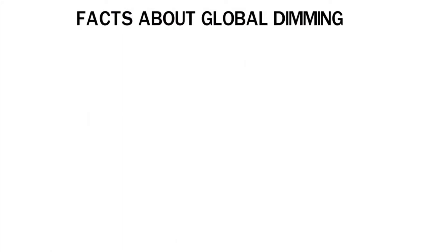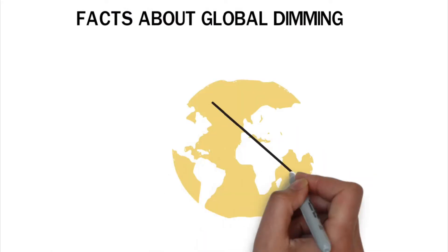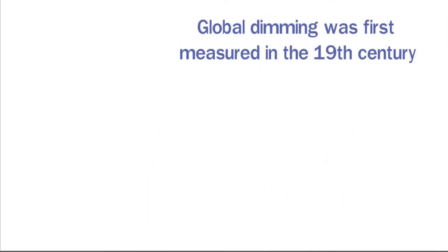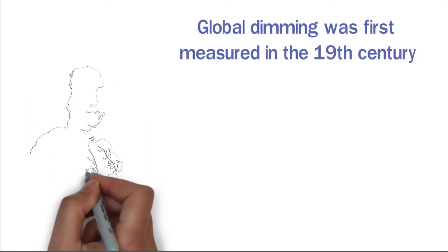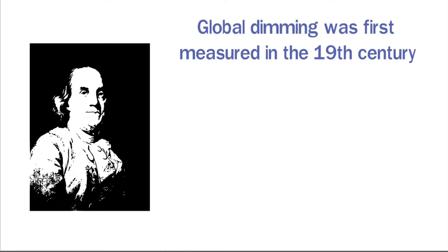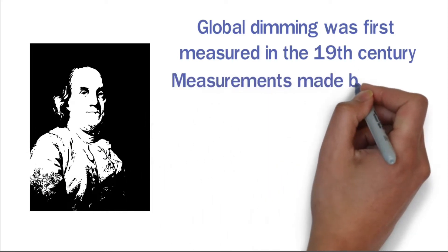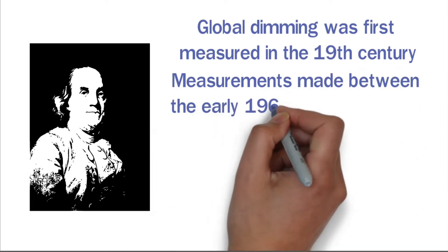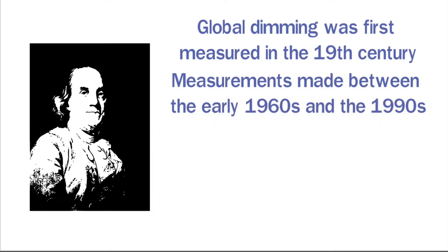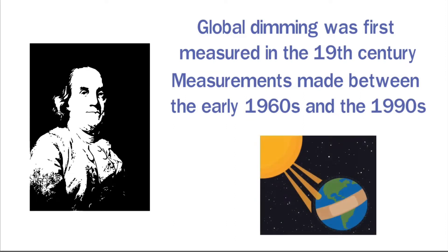Facts about global dimming. There has been a big drop in the amount of solar radiation that gets to the surface of the earth. Global dimming was first measured in the 19th century. However, Benjamin Franklin, an American experimenter, first talked about this in the 18th century. Measurements made between the early 1960s and the 1990s had some interesting finds, showing a big drop in the amount of solar energy that reaches the planet's surface.